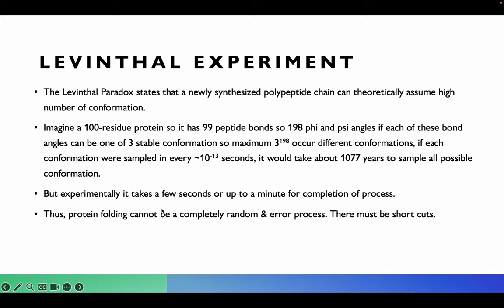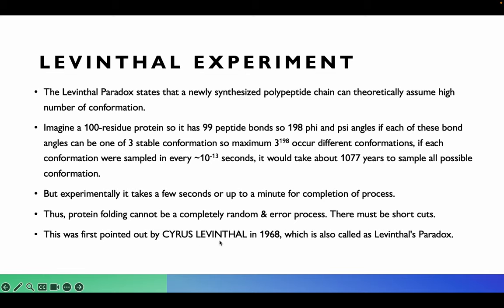Yet in reality, proteins fold in only a few seconds to up to a minute. How is it possible that what should take 10^77 years takes only seconds? Levinthal concluded that protein folding cannot be a completely random trial-and-error process. There must be some mechanism, some information, or some shortcuts available that guide protein folding — and this is the Levinthal paradox, named after Cyrus Levinthal.